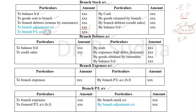When I work out the problems, I will explain how to calculate this — specifically, from the balancing figure, how to find the value to be transferred to the branch adjustment account. After doing the branch stock account, there is no change in the method of preparing branch debtors account or branch expenses account. While preparing the branch profit and loss account, there will be one more additional entry. We will prepare another account called branch adjustment account, and its balancing figure will be transferred to the P&L account.